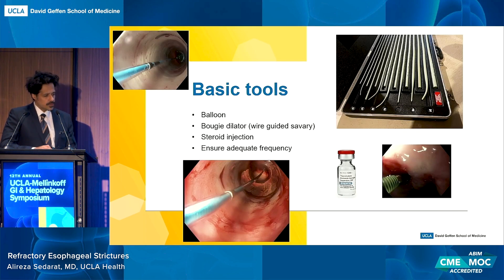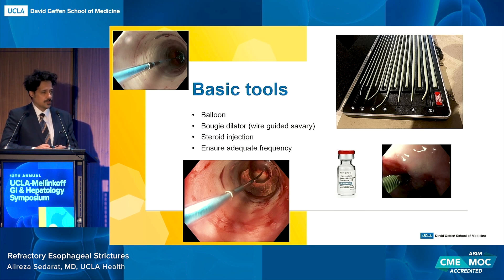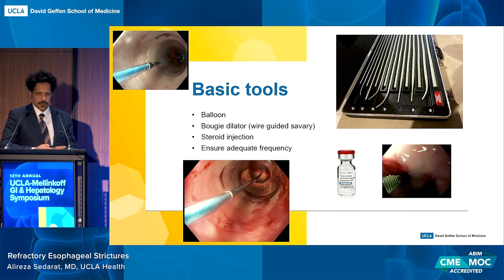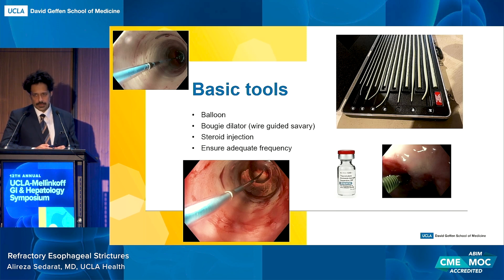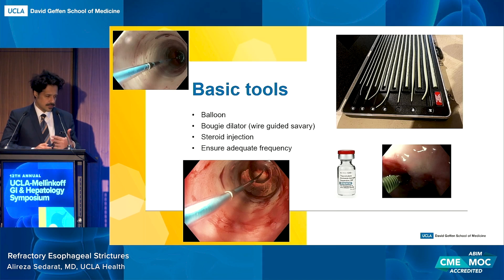Your basic tools — most folks these days probably use a disposable balloon, while many ambulatory centers use bougie dilators more commonly, perhaps because it's more cost effective. They each have advantages and disadvantages. Steroid injection, although considered adjuvant, is somewhat basic. One of the most important basic tools is ensuring adequate frequency — at the largest interval, if you're going to call someone recurrent or refractory, it's no later than two weeks. I've brought people back one week or shorter to dilate — it's a matter of two steps forward, one step back until you start to make some progress.